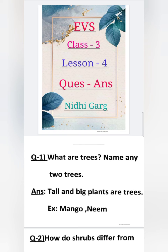Answer. Tall and big plants are trees. Tall means oochay, big means bhoat baade. Bohot oochay aur bohot baade paudhe jo hain, unhein vriksh kaha jata hai. Examples: Mango and Neem.